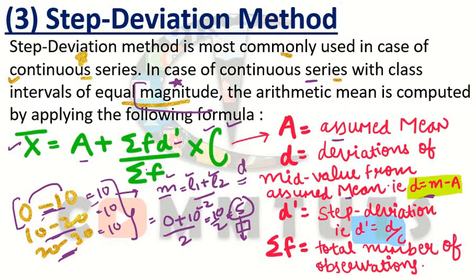From the mid values you take one middle value as the assumed mean. Then you calculate deviations. This work was done in the shortcut method too. But when we apply step deviation method, one extra step is added: after calculating deviations, we also calculate step deviation. d' is what we call step deviation, and it is calculated as d ÷ c, where d is the deviation calculated earlier and c is the common factor or common difference.